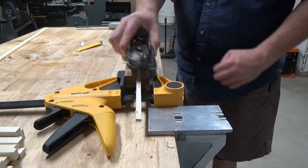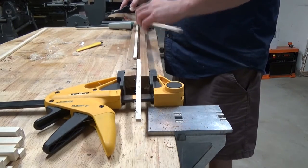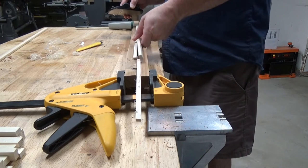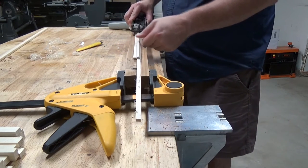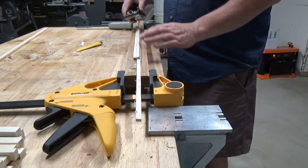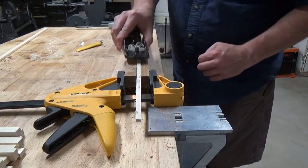Instead of trying to run these small pieces through the thickness planer to smooth this fresh bandsaw cut, I make up this jig and clamp it to my bench. I then smooth the edges with a hand plane. In this scene, I'm easing the corners with a block plane.